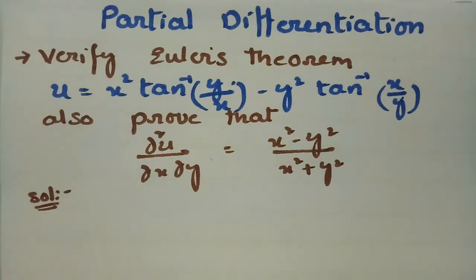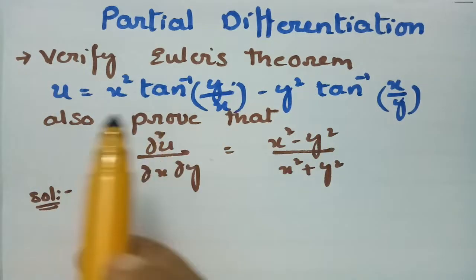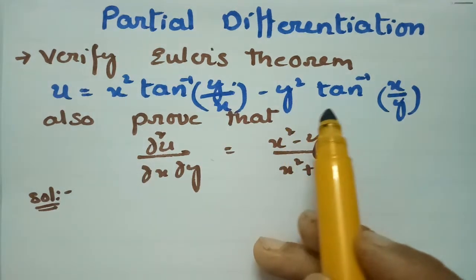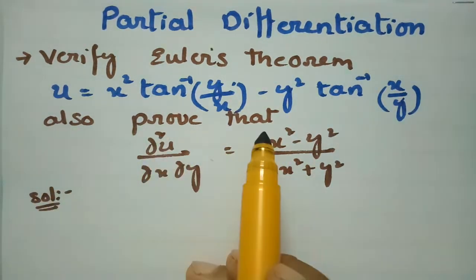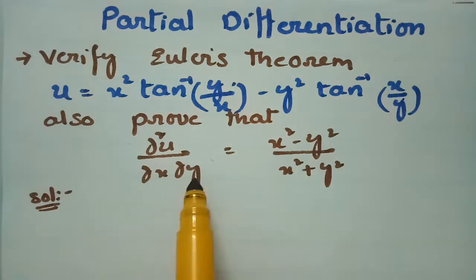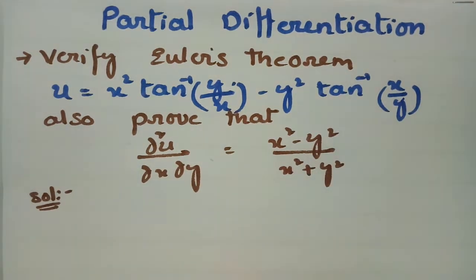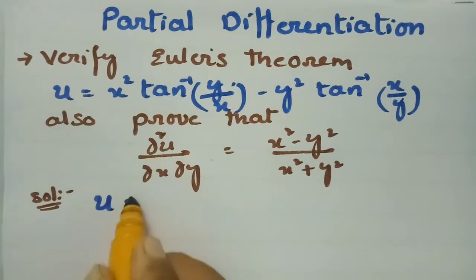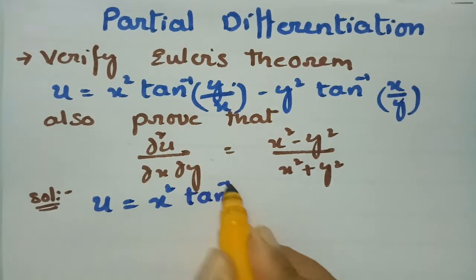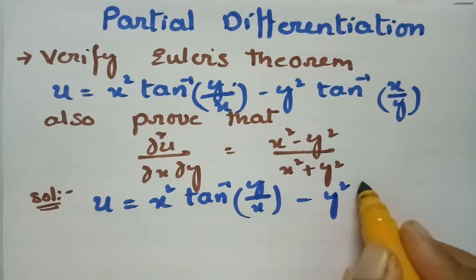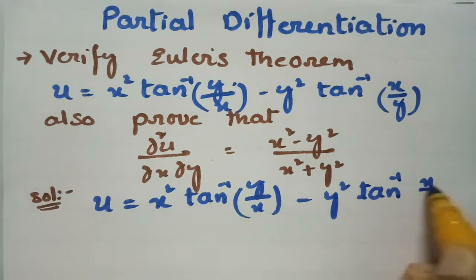Today's video I am going to verify Euler's theorem, and this problem is from partial differentiation. u is given as x square tan inverse of y by x minus y square tan inverse of x by y, and we also have to prove that ∂²u/∂x∂y is equal to x square minus y square by x square plus y square.